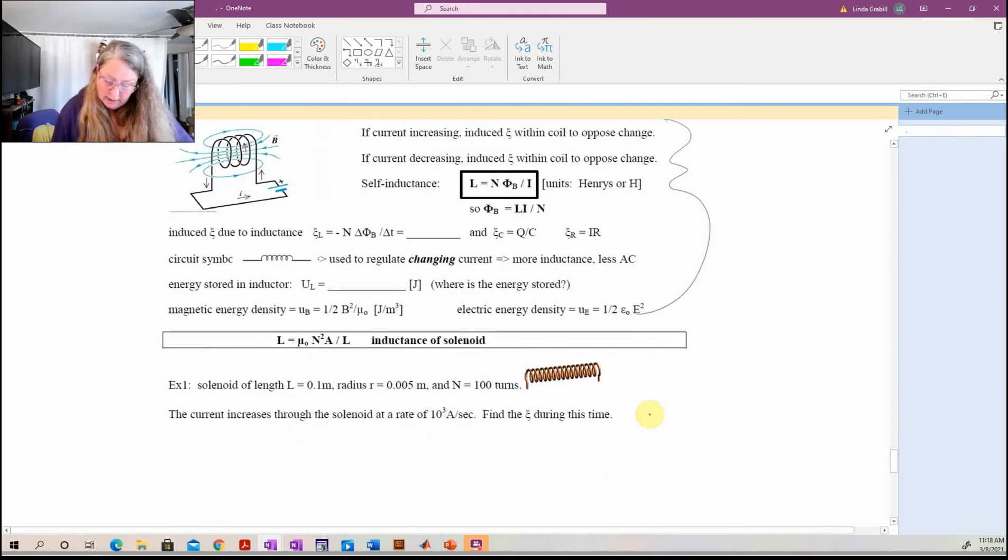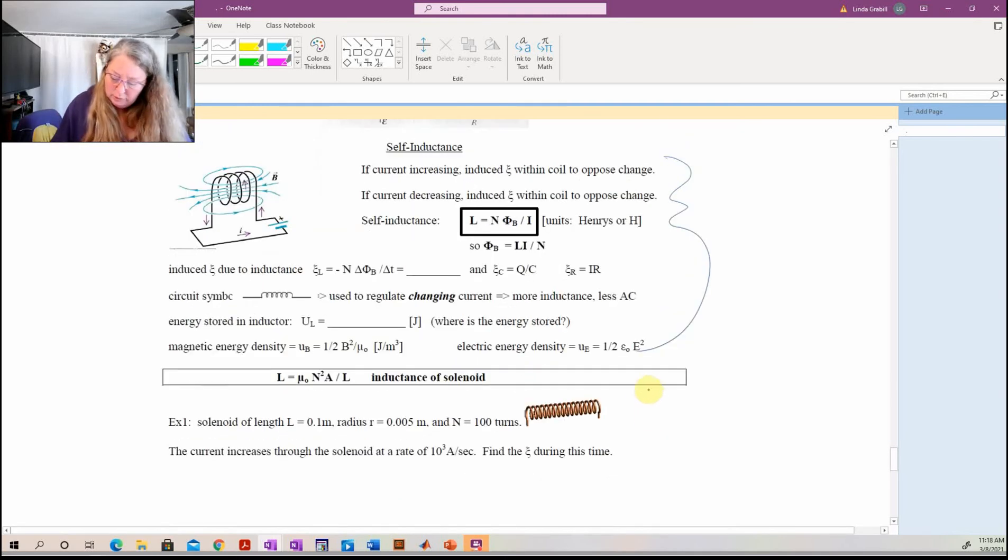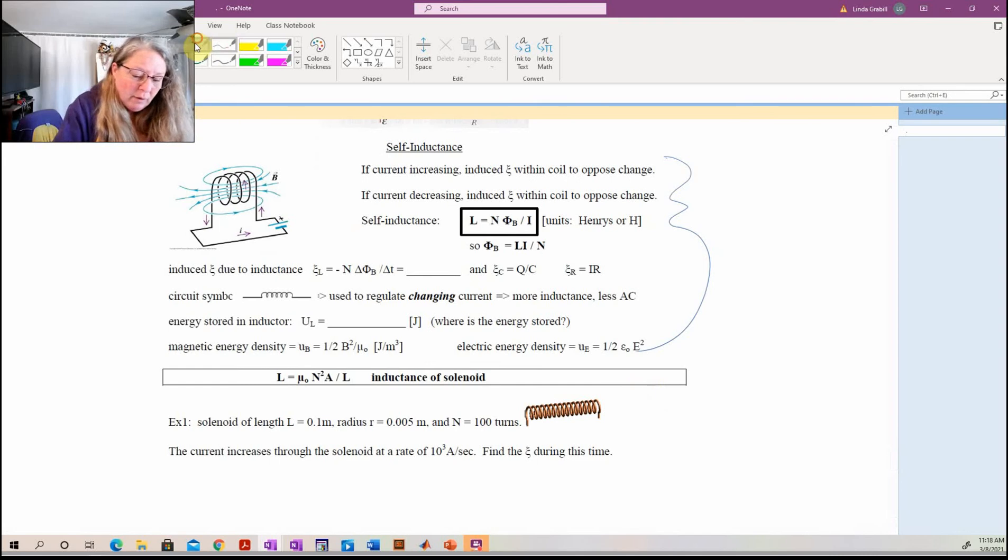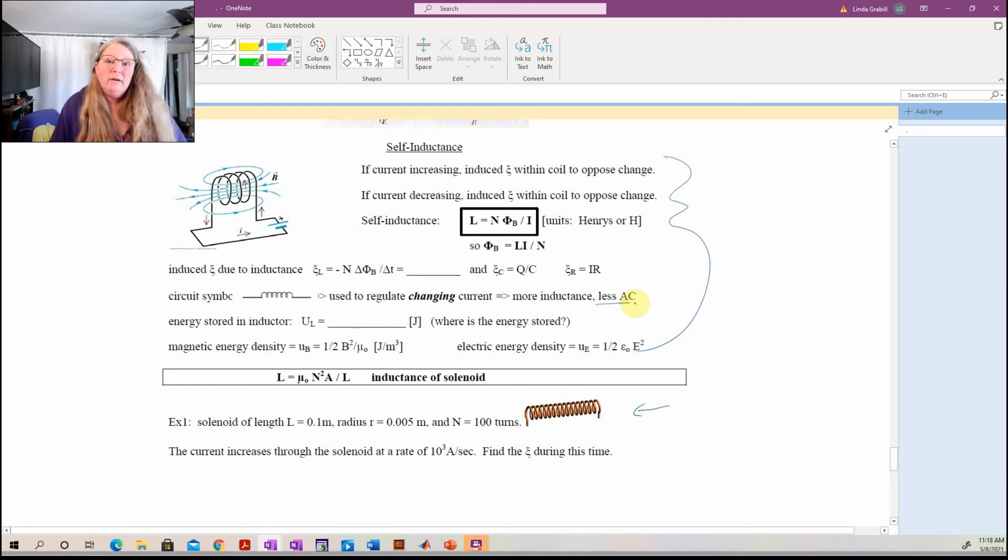What I do want to do is kind of focus on this thing that we actually use and then talk about how we look at these in circuits. Now there is one little piece that you're going to notice here, alternating current. Yeah, don't have time, but what you get out of your wall isn't DC, it's alternating current. What inductors are really good for is for controlling changes in the alternating current.